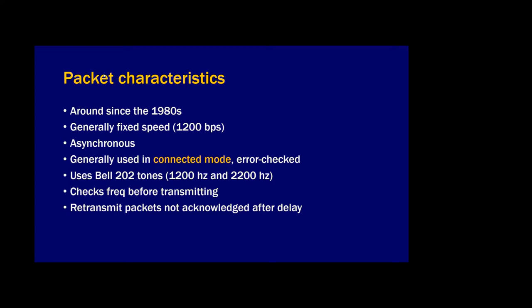Packet is asynchronous as opposed to something like PACTOR, which has very careful timing. It's generally used in connected mode, meaning you're talking to a particular station that acknowledges each packet before the next one is sent — unlike audio and video which just stream and don't care about missed packets. Packet uses Bell 202 tones: 1200 Hz and 2200 Hz. It checks the frequency before transmitting and will retransmit a packet if not acknowledged, at exponentially increasing intervals.